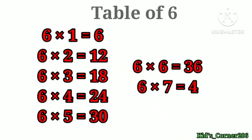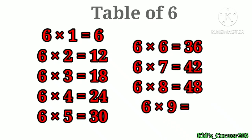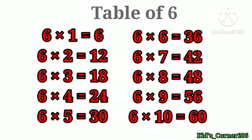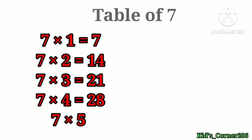6×5=30, 6×6=36, 6×7=42, 6×8=48, 6×9=54, 6×10=60. Table of 7: 7×1=7, 7×2=14, 7×3=21